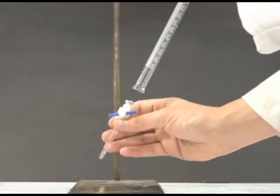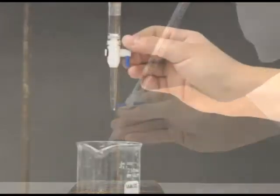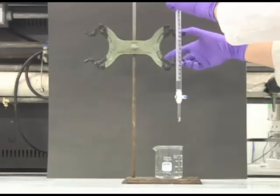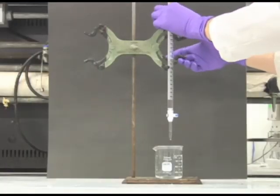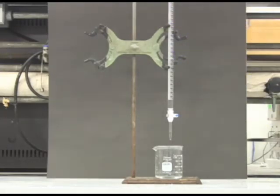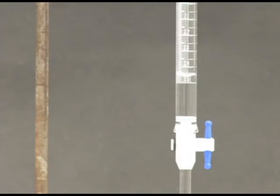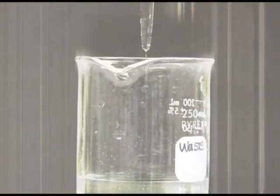Replace the tip, make sure the stopcock is closed, and add a few milliliters of distilled water to the burett. Place the burett in the burett holder with a beaker below the tip. Open the stopcock on the tip and let the water drain through the stopcock. The water should drain from the tip in a steady stream.